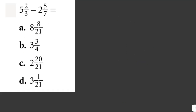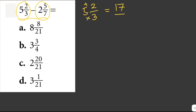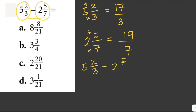Five and two-thirds minus two and five-sevenths equals what? To find the difference of these two mixed fractions, we write each as an improper fraction. Five and two-thirds becomes: 3 times 5 is 15, plus 2, equals 17 over 3. Two and five-sevenths becomes: 7 times 2 is 14, plus 5, equals 19 over 7.